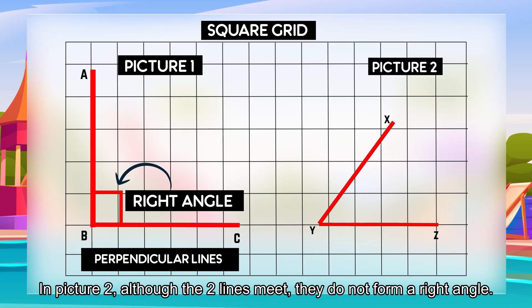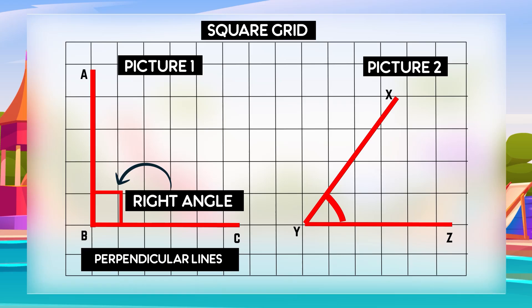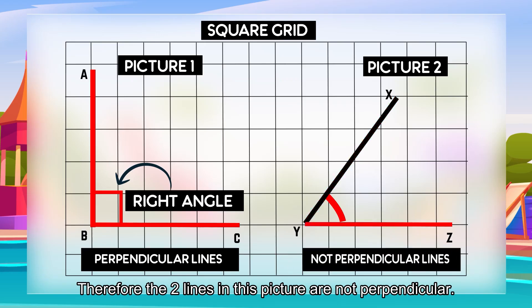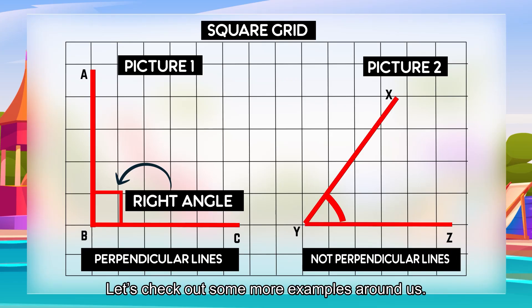In picture two, although the two lines meet, they do not form a right angle. Therefore, the two lines in this picture are not perpendicular. Let us check out some more examples around us.